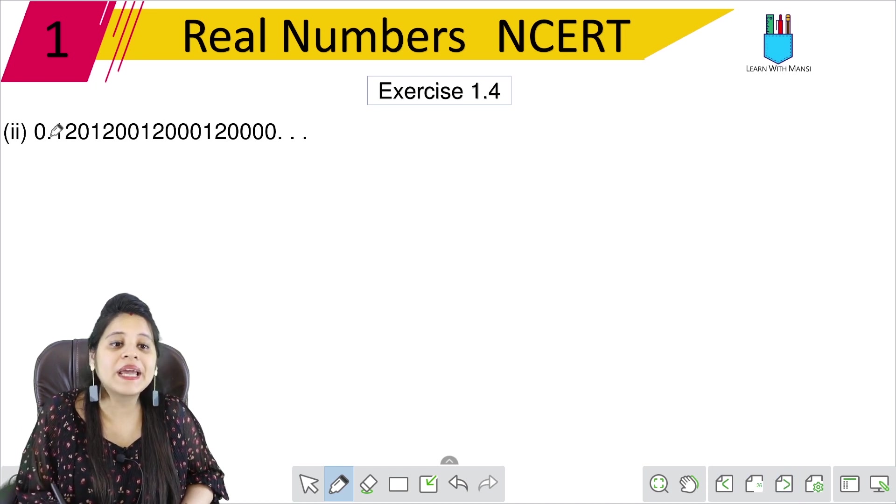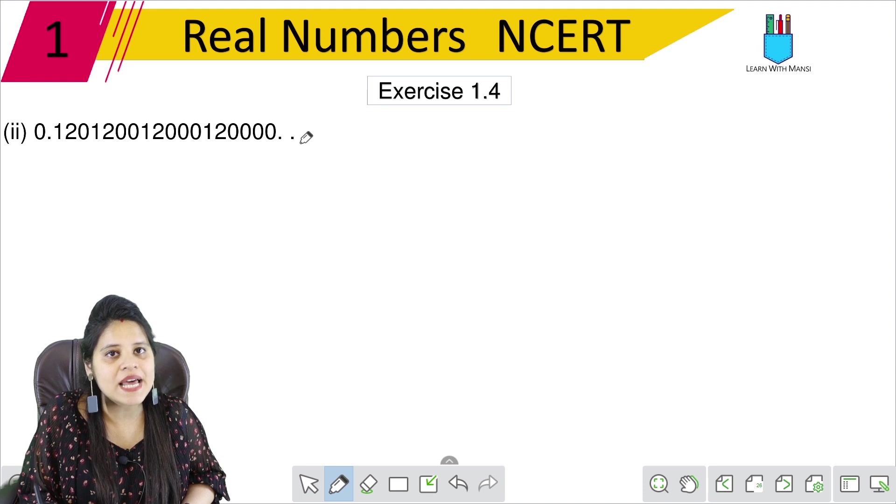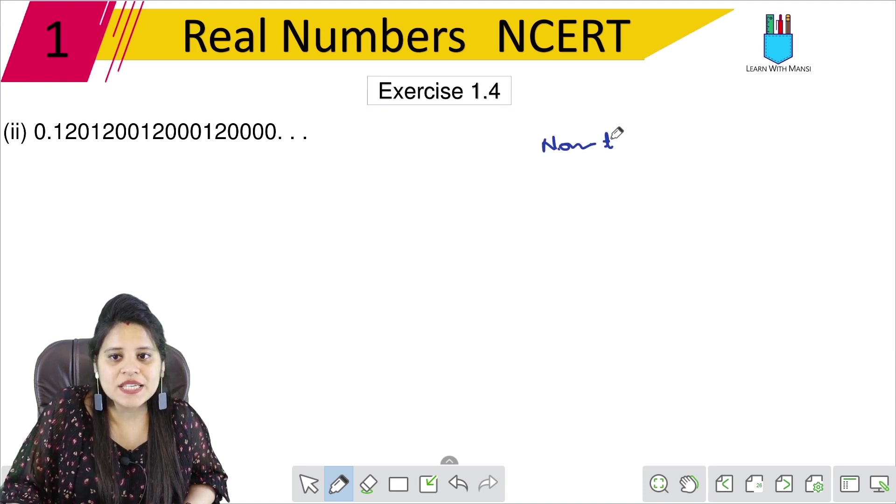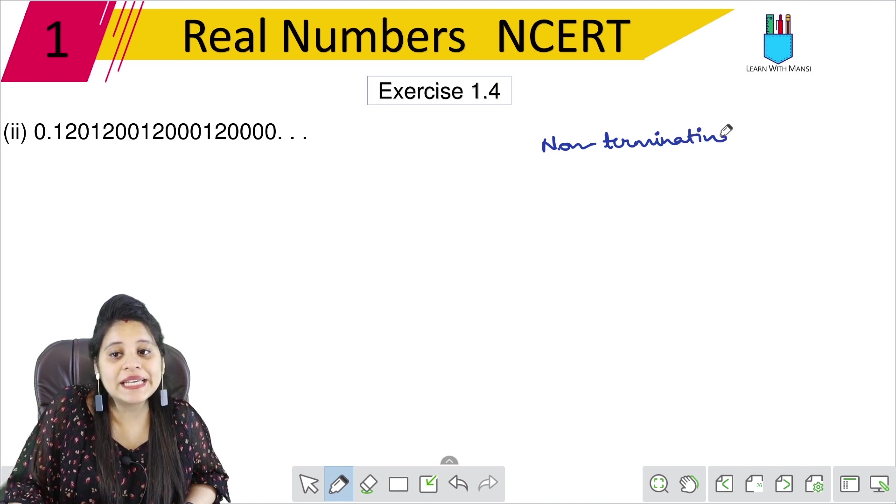In the second part, 0.120120012000 with dash dash dash. It means that it does not terminate. So this is non-terminating. Also, non-terminating can be rational or irrational.